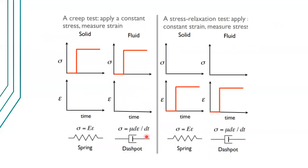So if you have a viscoelastic material, one way to examine its properties is to apply certain tests. There are two kinds: one is what we call the creep test and the other is the stress relaxation test. In the creep test, you apply a constant stress to a material, hold it there for some period of time, and then measure the strain at specific points in time.